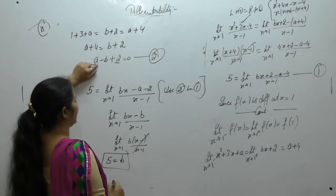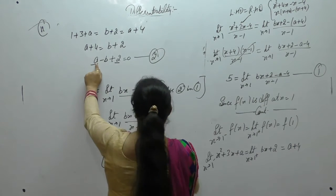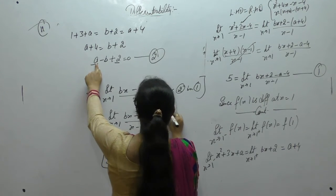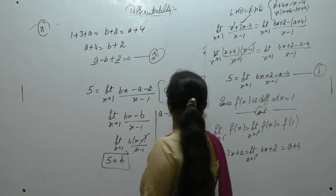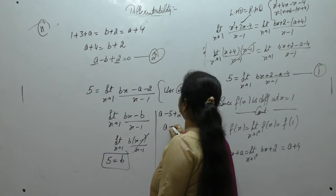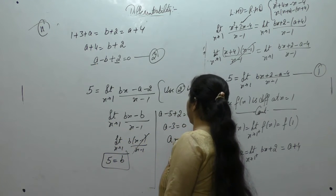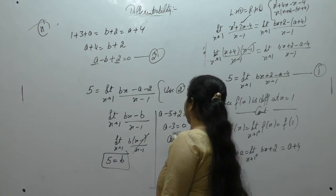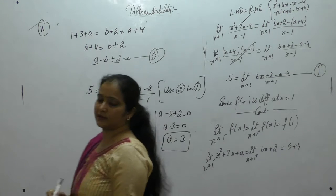Put the value of b here. b is 5, so 5 plus 2 gives a minus 3 equal to 0. So we get the value of a as 3.